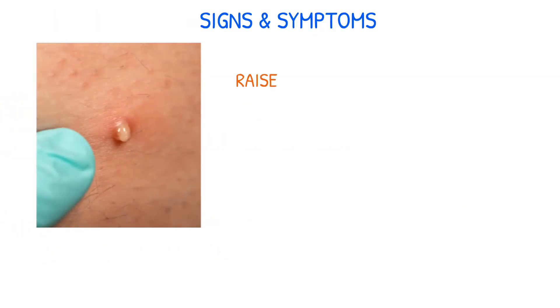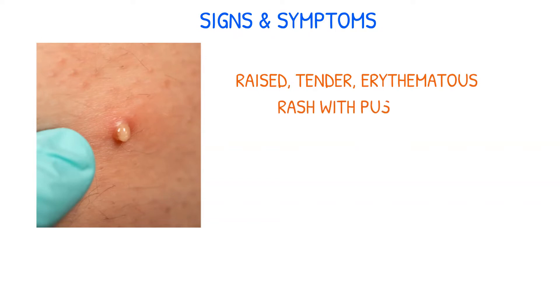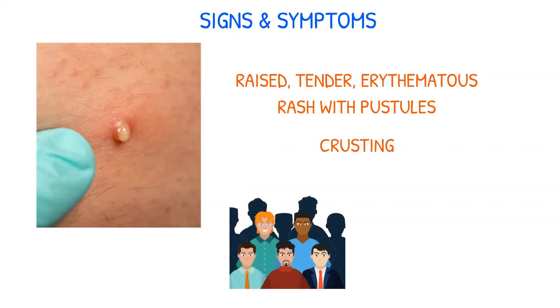Folliculitis can present as a raised, tender erythematous rash with pustules at the openings of the hair follicles. The affected area may also develop crusting. Men are more likely to get these lesions on their scalp, beard, and extremities.